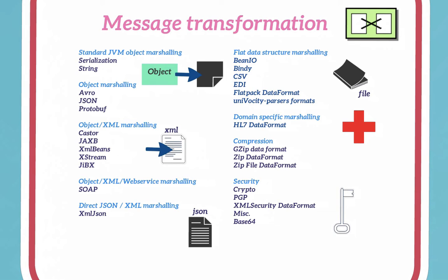Camel automatically converts various formats using a manipulation library. It is easy to convert from XML, JSON, or Java objects to many different formats. It also supports message compression — when a message gets too big, it allows transport to be done more efficiently. It is highly customizable and you can even use mappers to map into different documents.